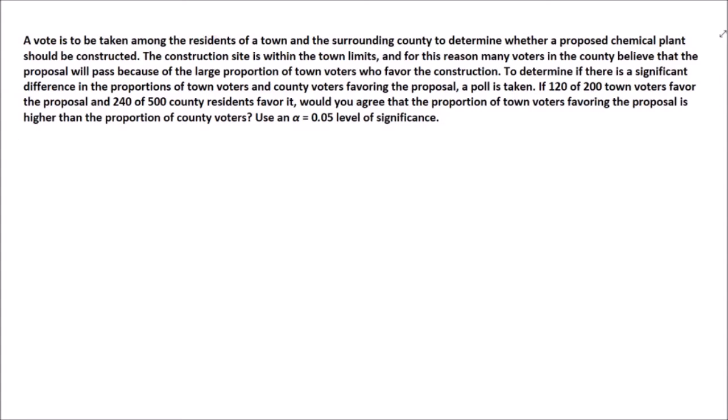A vote is to be taken among the residents of a town and the surrounding country to determine whether a proposed chemical plant should be constructed. The construction site is within the town limits, and for this reason many voters in the country believe that the proposal will pass because of the large proportion of town voters who favor the construction. To determine if there is a significant difference in the proportions of town voters and country voters favoring the proposal, a poll is taken.